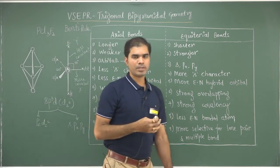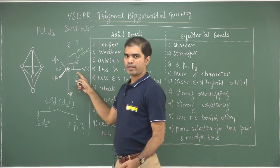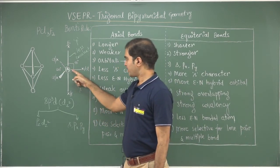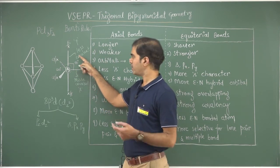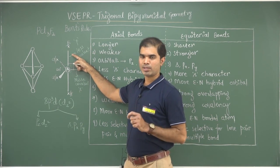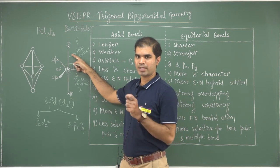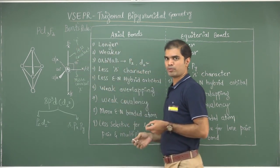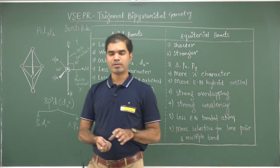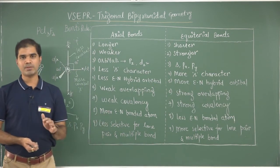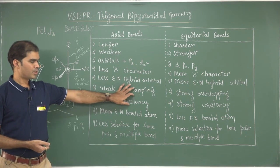At an advanced level, Bent's rule can also be stated differently: wherever S contribution is present, there is greater covalency in the bond; wherever less S character is present, there is lesser covalency or more ionicity, and the more electronegative atom chooses that hybrid orbital. That is the advanced form of Bent's rule. So this covers trigonal bipyramidal geometry — where the more electronegative bonded atom goes, where lone pairs or multiple bonds go. You can take a screenshot of this table. Thank you.